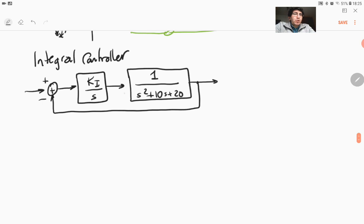Now, unfortunately, the order of the system is increased. If you take a look at our open-loop transfer function, so our gc of s, g of s, now is not a second-order system, but is a third-order system.